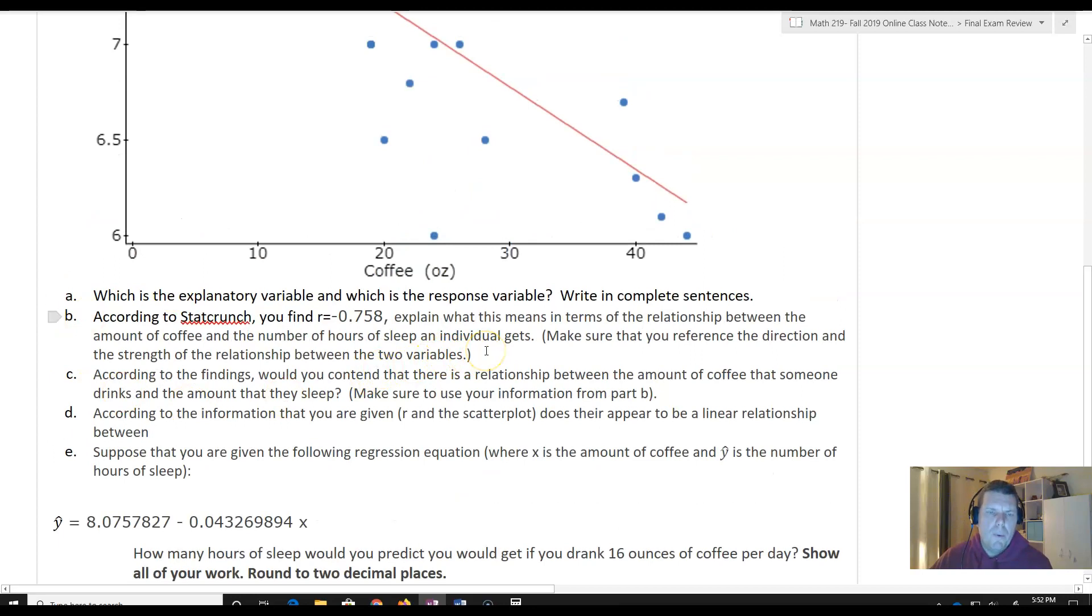According to StatCrunch, now we get an R of negative 0.758. Explain what this means in terms of the relationship between the amount of coffee and the number of hours of sleep an individual gets. So what this means is first I want to notice that it's negative. So first R is negative. And since R is negative, what that tells me is that as I increase the amount of coffee that I drink, sleep is going to go down.